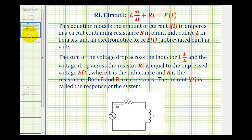The differential equation L times di/dt plus R times i equals e of t can be used to model the amount of current i of t in amperes in a circuit containing a resistance R in ohms, inductance L in Henrys, and the electromotive force e of t in volts.